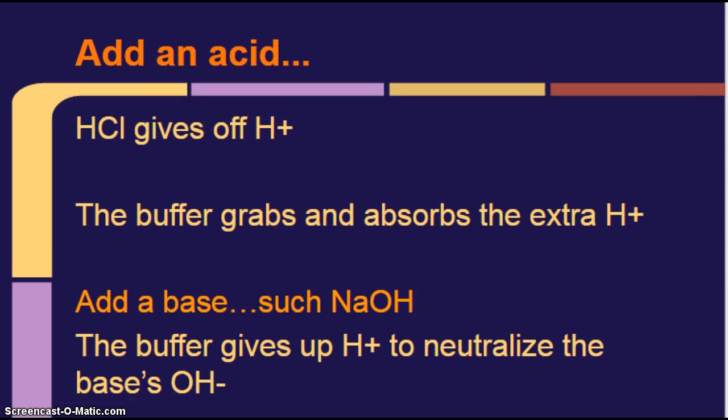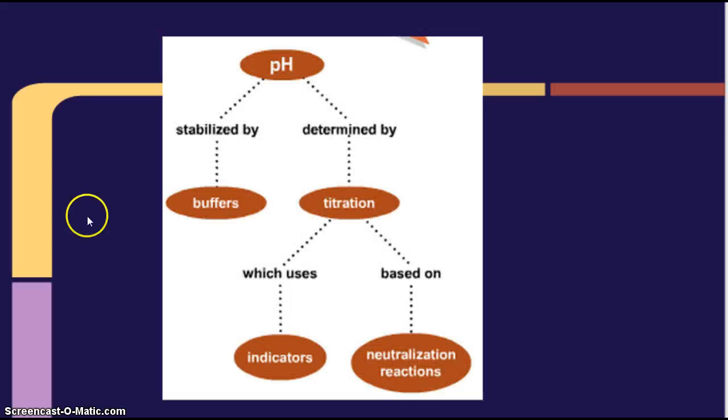Now, again, we talked about how there's different ways to categorize acids and bases based on if they're accepting or donating electron pairs or protons. But again, overall, thinking about acids with the H, bases with the OH will pretty much get you through most of what we need in this course. All right. So pH, we stabilize it by buffers. We keep it close to the same.